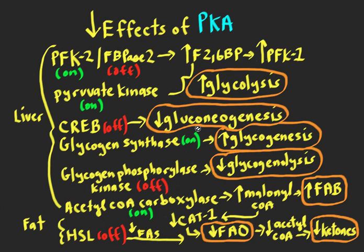For gluconeogenesis, fructose 2,6-bisphosphate suppresses one of the gluconeogenic enzymes. Additionally, CREB — the cyclic AMP response element binding protein — which is normally phosphorylated by PKA, is not phosphorylated here, so it's not inducing gluconeogenesis enzymes like PEP carboxykinase, pyruvate carboxylase, and fructose bisphosphatase 1. Without CREB being phosphorylated, gluconeogenesis enzymes are not induced. Glycogen synthase, when not phosphorylated by PKA, is turned on, promoting glycogen synthesis. And glycogen phosphorylase kinase is not phosphorylated, so glycogen breakdown is turned off.